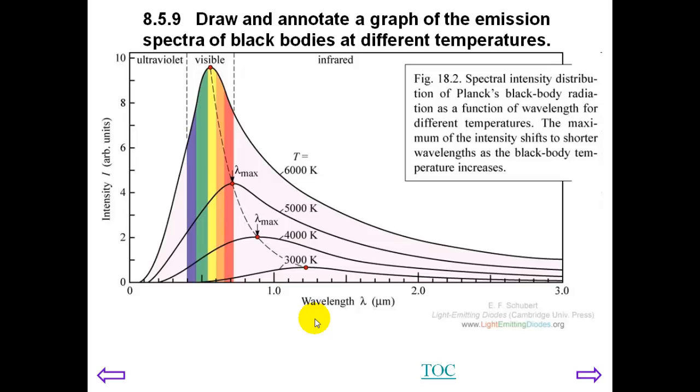Now we need to draw and annotate a graph of the emission spectra of black bodies at different temperatures. This graph we will be seeing a number of times in the next 12 months. This is a graph of the intensity of radiation at different wavelengths. Now we start with 3000 Kelvin. The total area is the total power output. And we notice that it's actually quite small. The maximum intensity is at a wavelength of 1.2 micrometres.